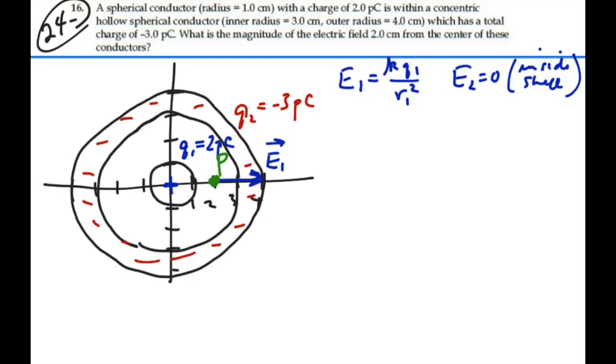So our E field is only going to be due to the Q1, and so E is going to equal E1, which is going to equal K, 9 times 10 to the 9, times Q1, which is 2 picocoulombs, 2 times 10 to the minus 12, over R, our distance from the center of that charge, which is going to be 2 centimeters, so we have 0.02 meters squared.